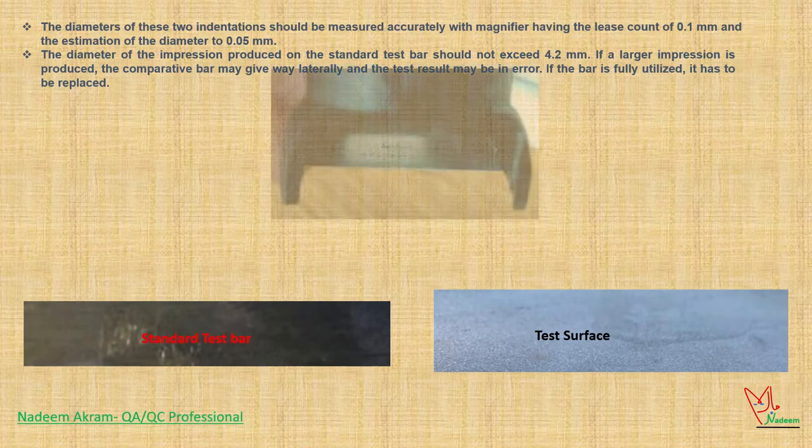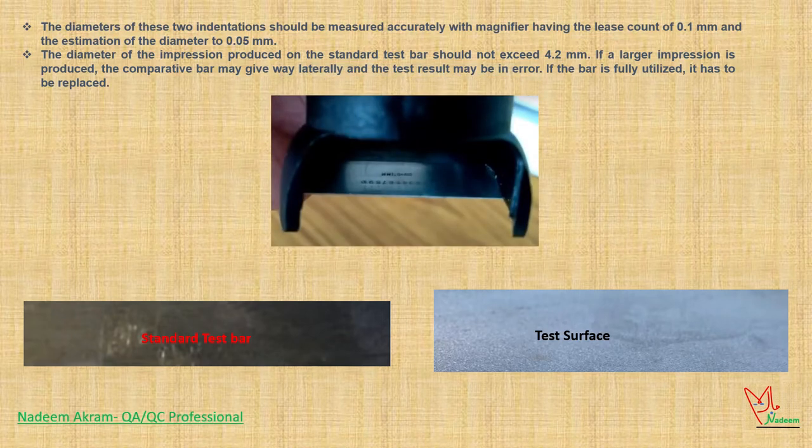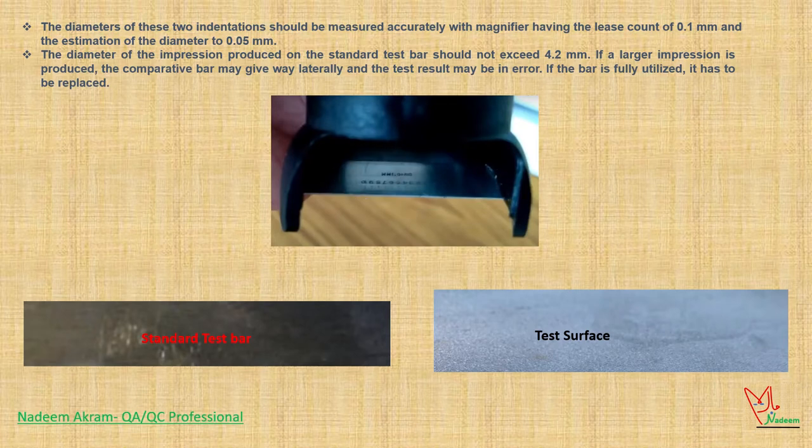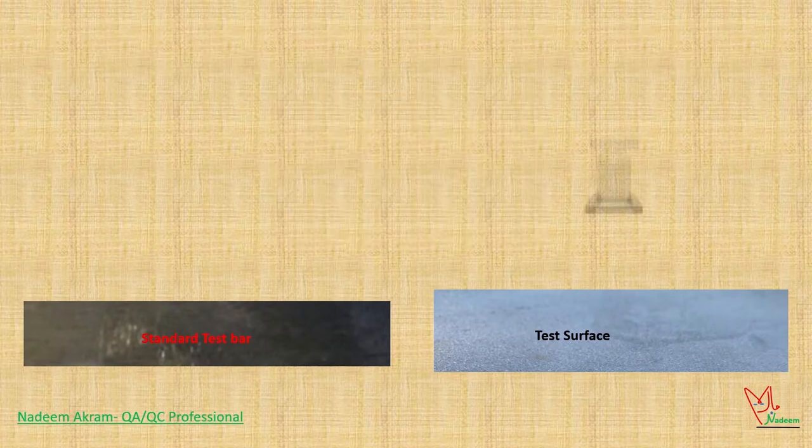The diameters of these two indentations should be measured accurately with a magnifier having the least count of 0.1 millimeters and the estimation of the diameter to 0.05 millimeters.